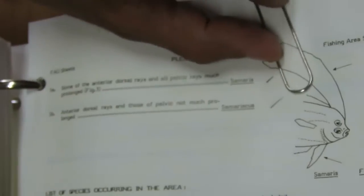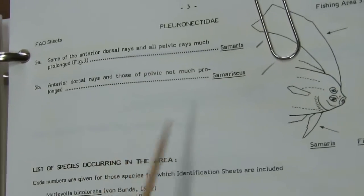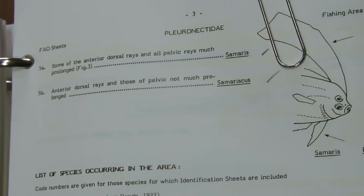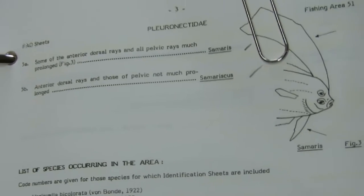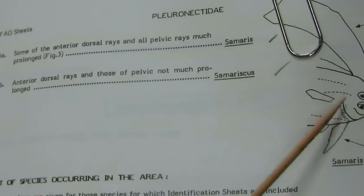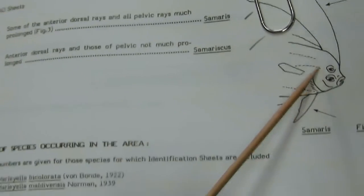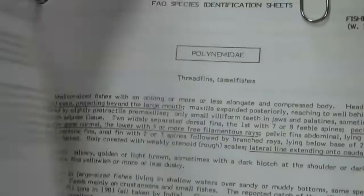Next is Pleuronectidae. In the case of pelagic Thors and Algonsa species, the lateral line is well developed on both sides. In the case of Samaris and Samariscus species, the lateral line on the blind side is rudimentary or absent.